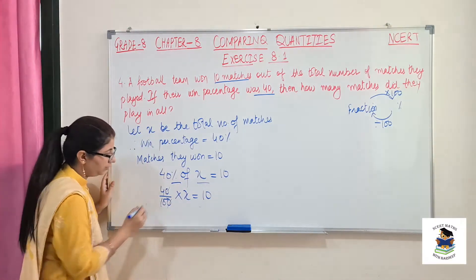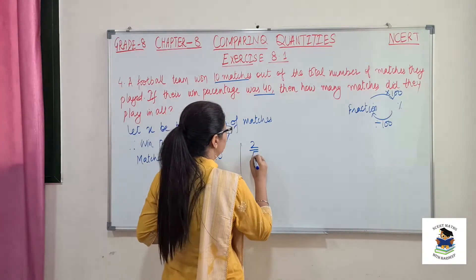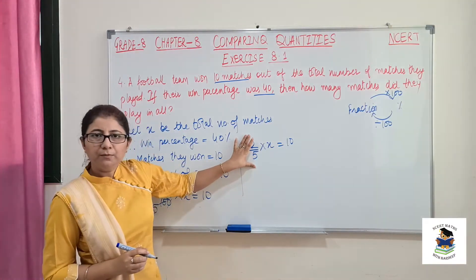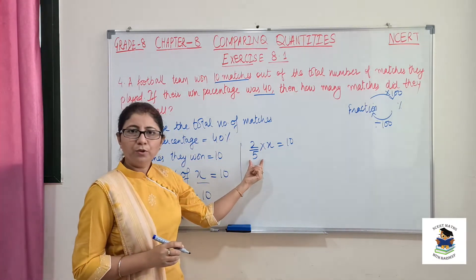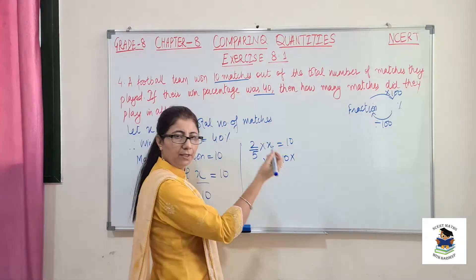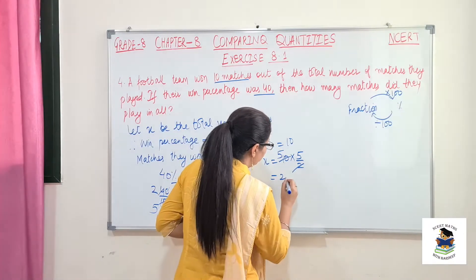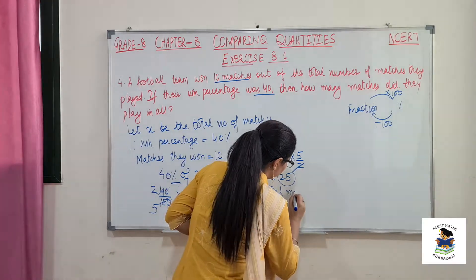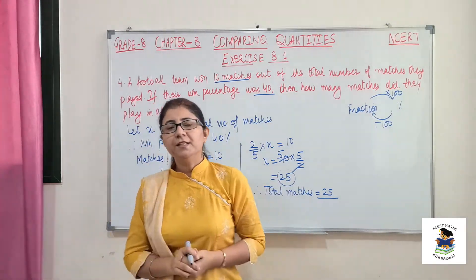So 40 over 100 multiplied by x equals 10. Simplifying, the zeros cancel to give 2/5 of x equals 10. We need x, so when 2/5 is shifted to the other side, multiplication becomes division — take the reciprocal. So x equals 10 multiplied by 5/2, which gives 25. Therefore the total matches this team played are 25.